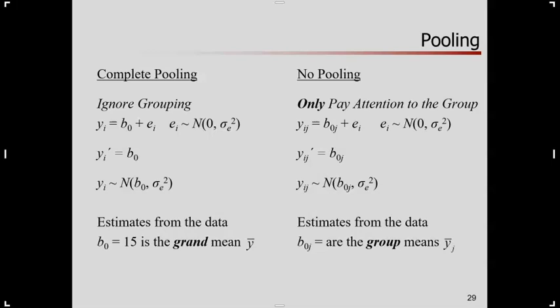Complete pooling means lump everyone together in one single group for analysis. Ignore that they come from 40 different groups. Treat everyone as one big old group. Completely pool or lump all the participants together. That says, don't pay any attention to what group somebody comes from. Ignore group membership entirely. It's irrelevant.